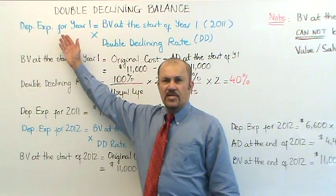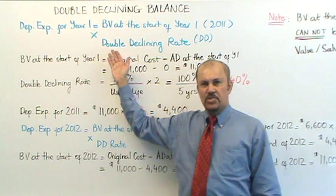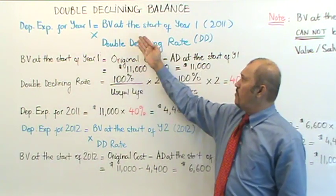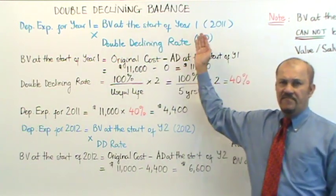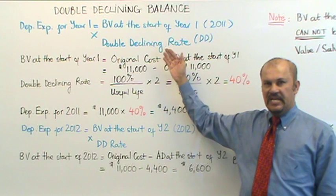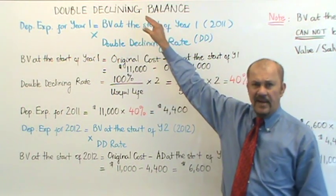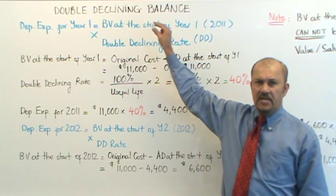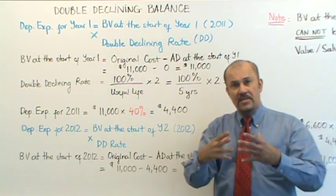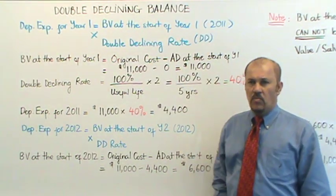Okay, let's get right into the formula for the depreciation expense for year one. In our example, that's 2011. Your depreciation expense for year one is your book value at the start of year one multiplied by your double declining rate, your DD rate. Next I'm going to give you a formula for the book value at the start of year one, then a formula for the double declining rate, and then we'll combine the two formulas to calculate the depreciation expense for year one.